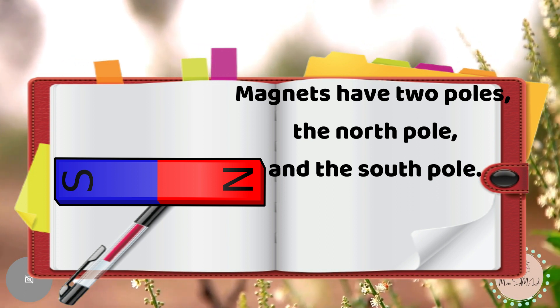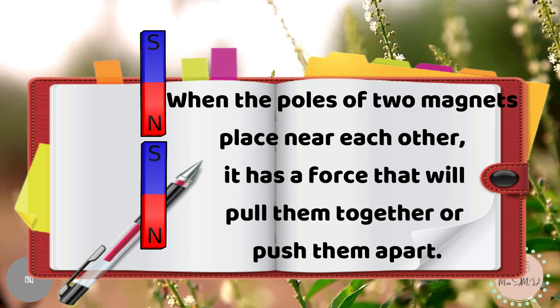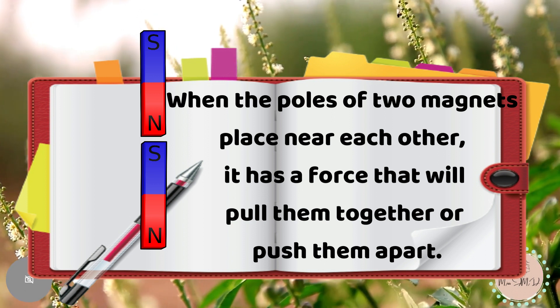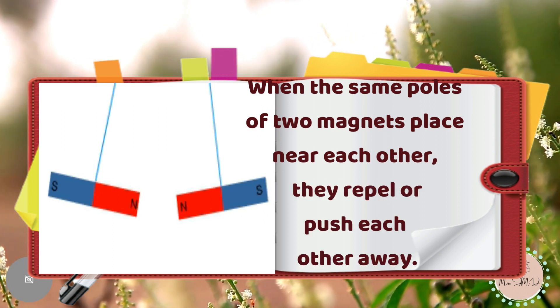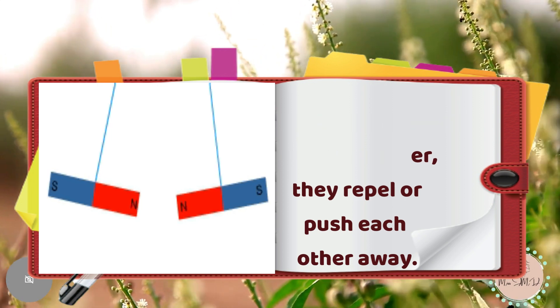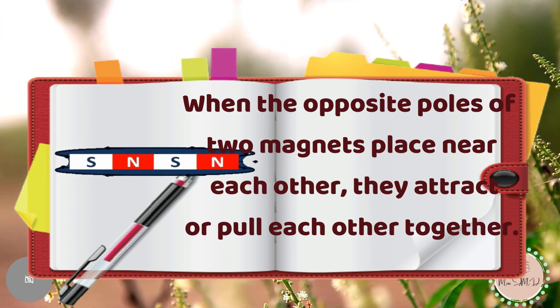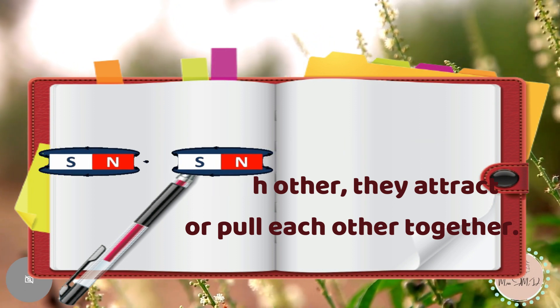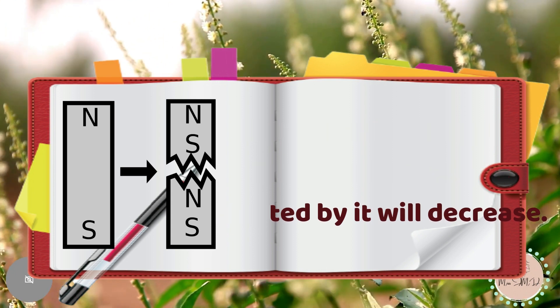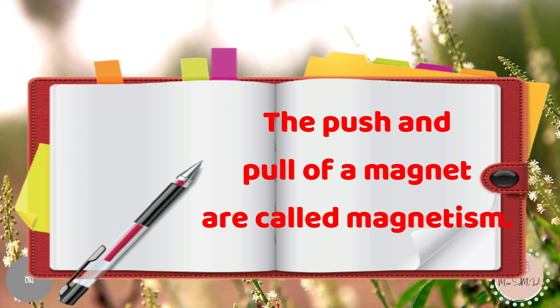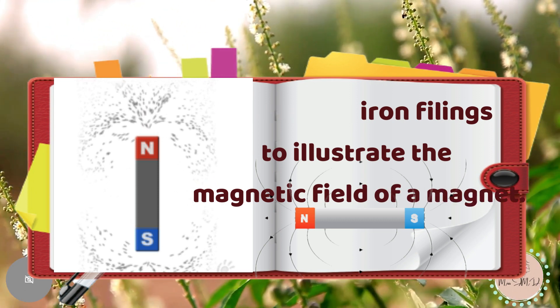Magnets have two poles, the north pole and the south pole. When the poles of two magnets place near each other, it has a force that will pull them together or push them apart. When the same poles of two magnets place near each other, they repel or push each other away. When the opposite poles of two magnets place near each other, they attract or pull each other together. If you break a magnet, the force that will be exerted by it will decrease. The push and pull of a magnet are called magnetism. We can use iron fillings to illustrate the magnetic field of a magnet.